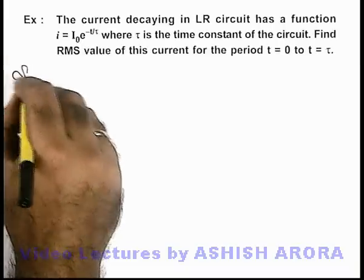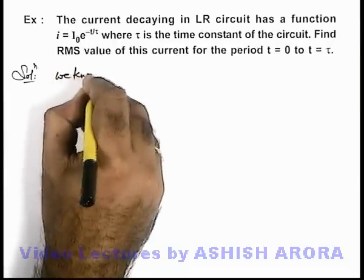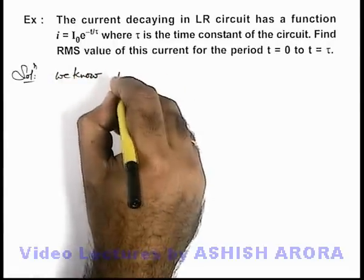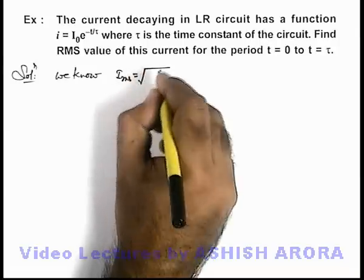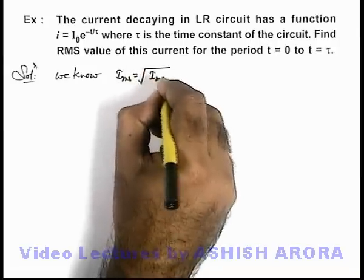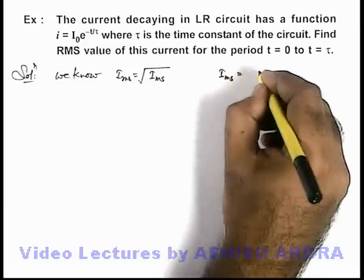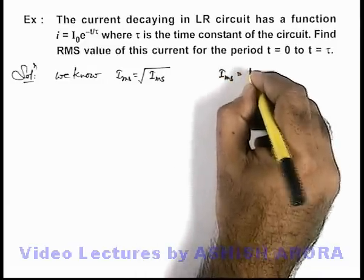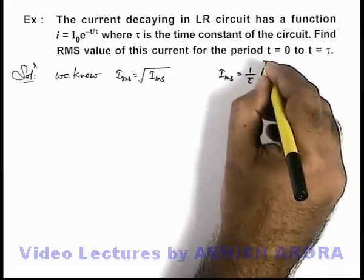Now in this situation, we know that the RMS value of any time varying current can be given as the square root of the mean square value. The mean square value can be calculated as: the function which we can use here is 1 by tau, integration from zero to tau.